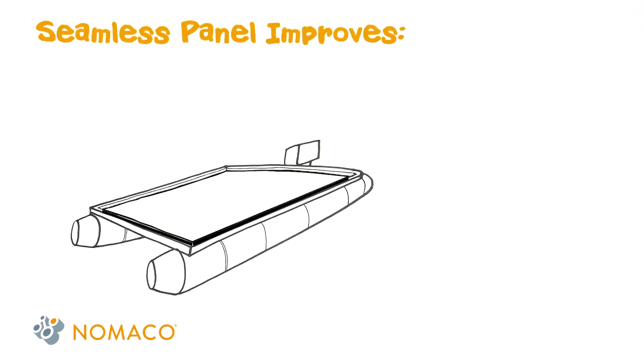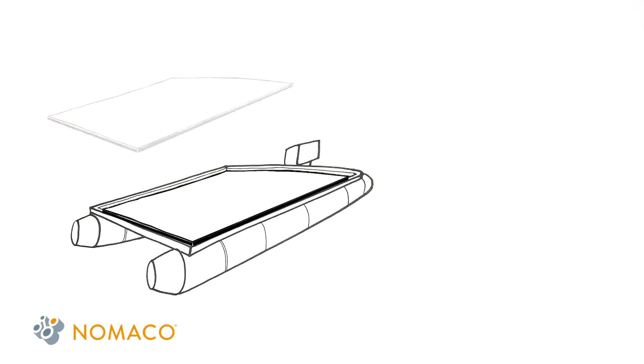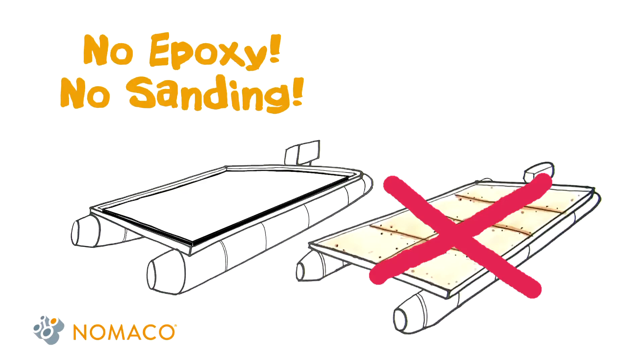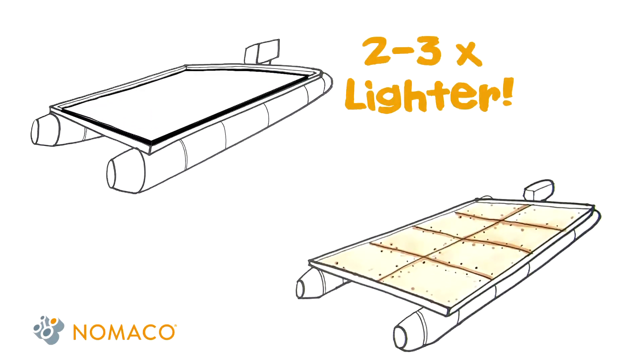A seamless panel improves cross-band strength and rigidity, and its closed cell structure adds buoyancy. One seamless panel can replace eight jointed plywood panels used in a boat floor with no epoxy or sanding needed. And they're two to three times lighter than marine-grade plywood, reducing total boat weight.